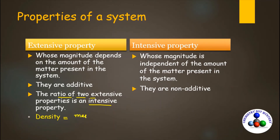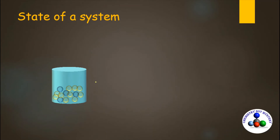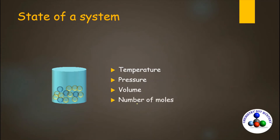The density is mass upon volume. Mass and volume are both extensive properties, and the ratio — density — is an intensive property. To define the state of any system, you have to define temperature, pressure, volume, and number of moles or mass of matter. These are called state variables.